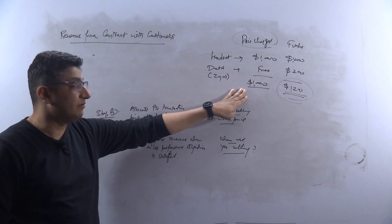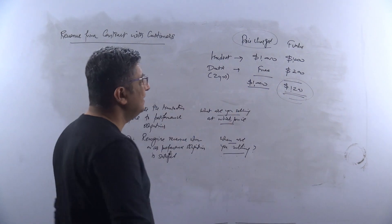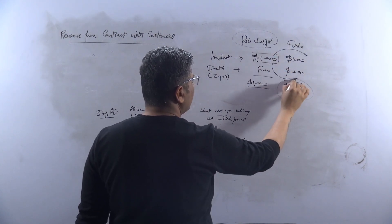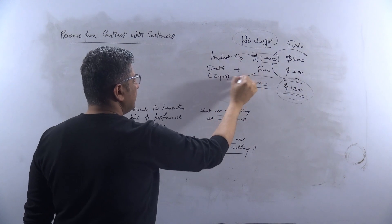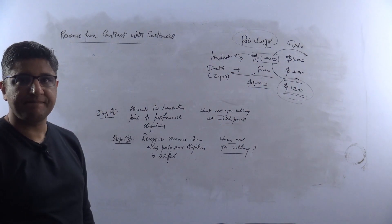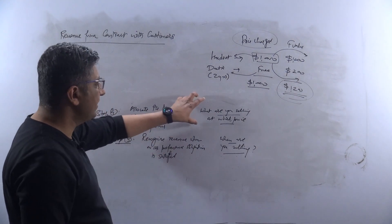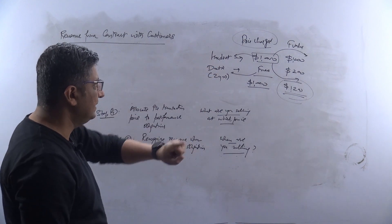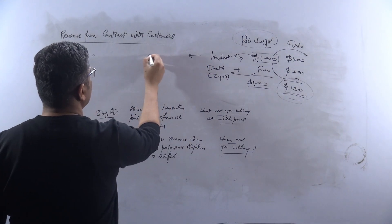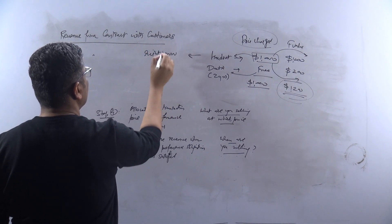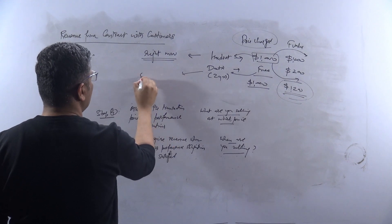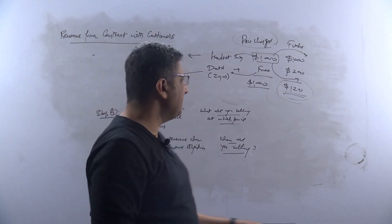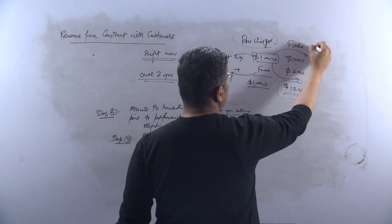Now what does it mean? It means that ideally speaking, this $1,000 should be allocated to both handset as well as the data. And that is where it's saying: what are you selling? You're selling handset as well as the data. At what price? Individually, because handset would be sold right now, but the data would be sold over two years of time.